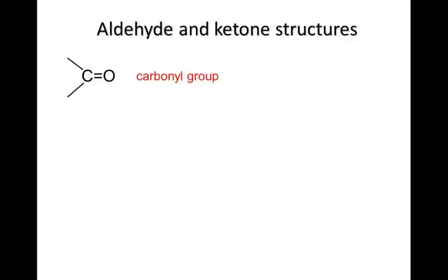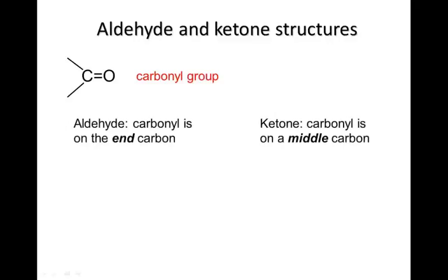The group of atoms that is the distinctive feature of aldehydes and ketones is the carbonyl group — a carbon atom with an oxygen double bonded to it. In an aldehyde, this group is on an end carbon, while in a ketone it's in the middle of the molecule surrounded by other carbons.